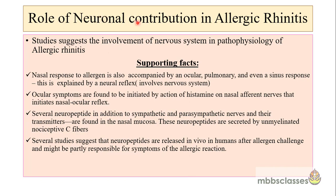The role of neuronal contribution is also being considered in the pathophysiology because the nasal response to the allergen is also accompanied by ocular, pulmonary and even sinus responses. This means that patients sometimes may have ocular and pulmonary symptoms also, and this is explained by the neural reflex which involves the nervous system. Another supporting fact is that ocular symptoms are found to be initiated by the action of histamine on nasal afferent nerves that initiates the naso-ocular reflex. Moreover, several neuropeptides in addition to sympathetic and parasympathetic nerves are found in the nasal mucosa, and these neuropeptides are secreted by the unmyelinated nociceptive C fibers.